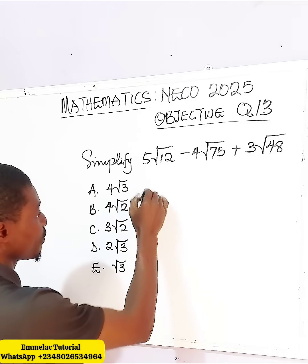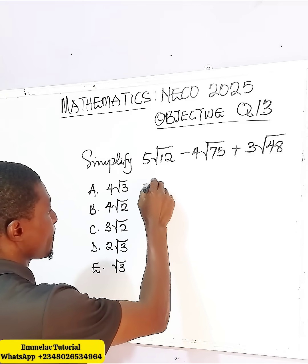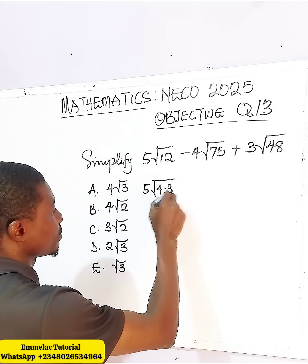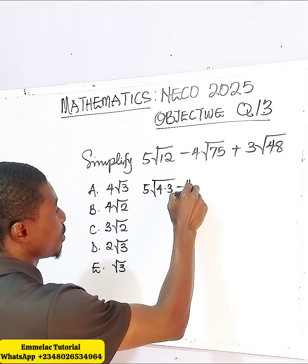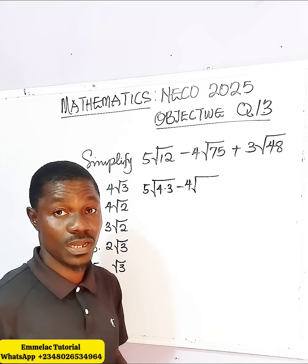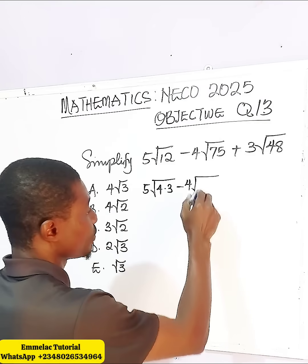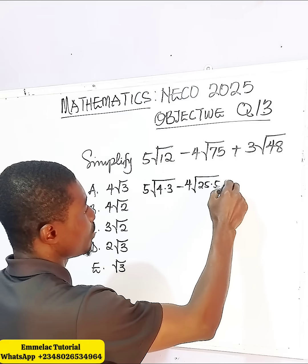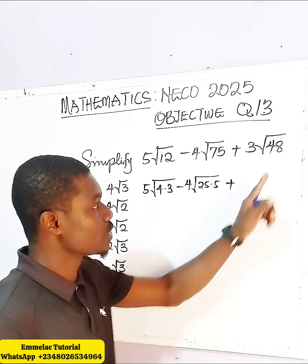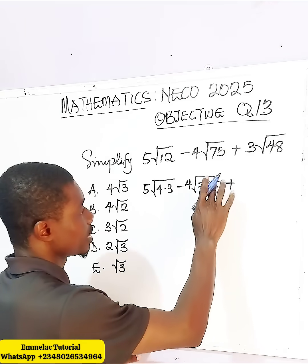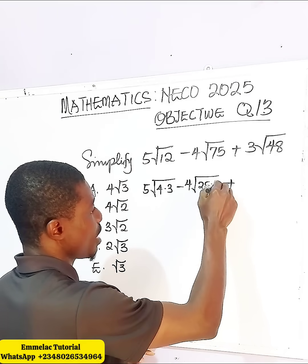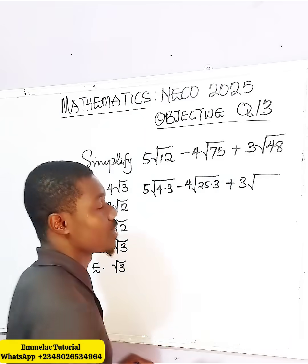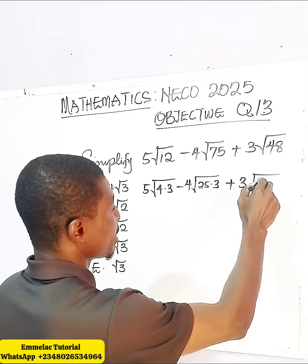So here we have 5√12, and 12 should give us 4 times 3. Then minus 4, and √75 should give us 25 times 3. Then plus 3, and √48 should give us 16 times 3.